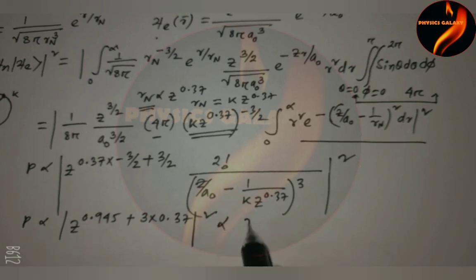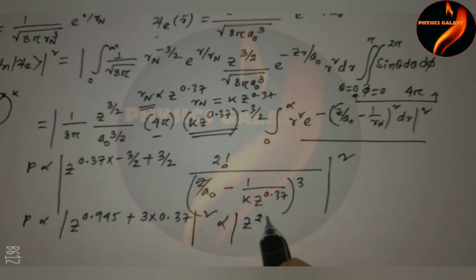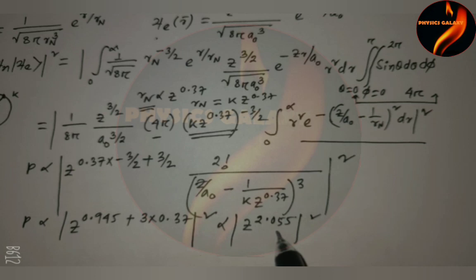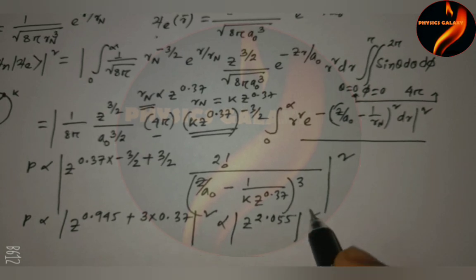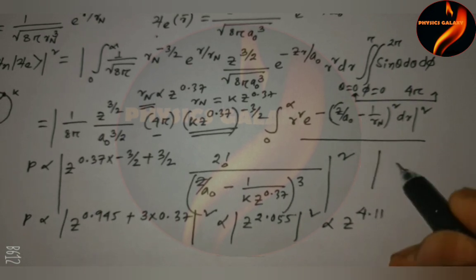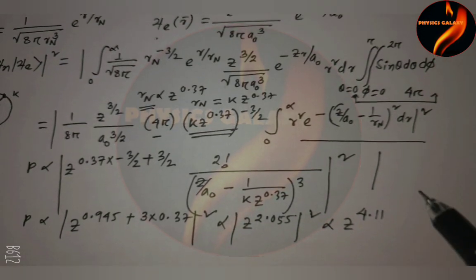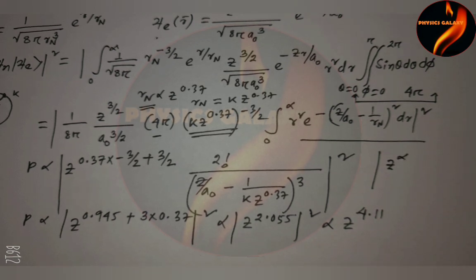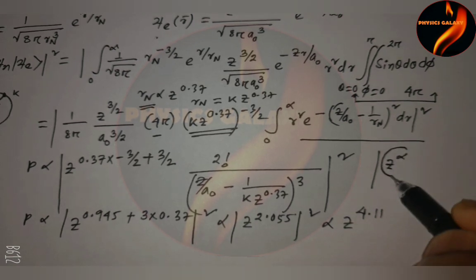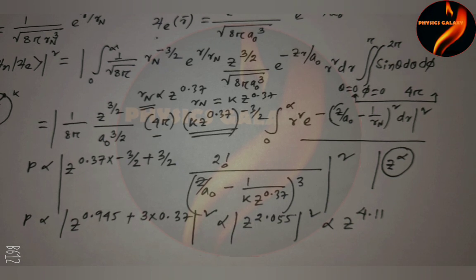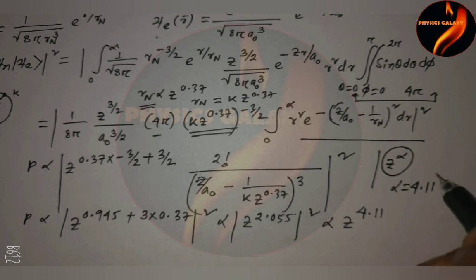So that means Z to the power 2.055 mod square. Then the mod square, the multiply of the two, that means Z to the power 4.11. Comparing the result, that means the probability is Z to the power alpha, the required variation of the Z term. So we compare the result, that is alpha equal to 4.11.